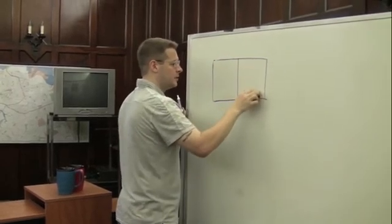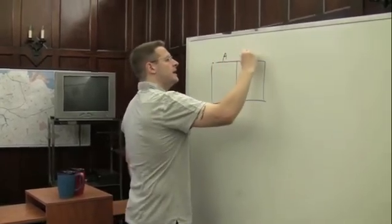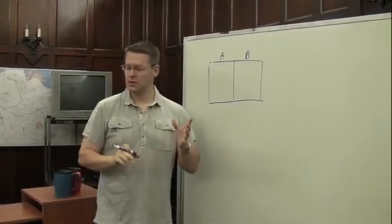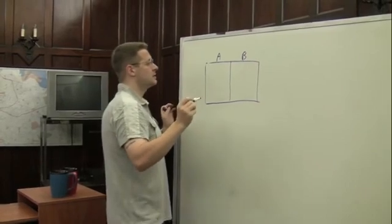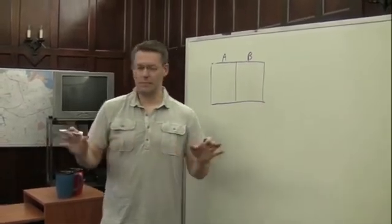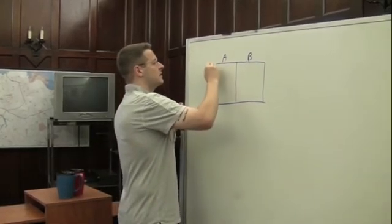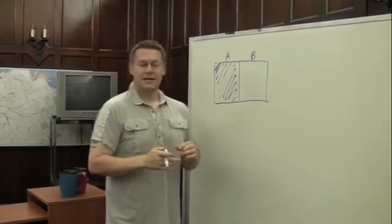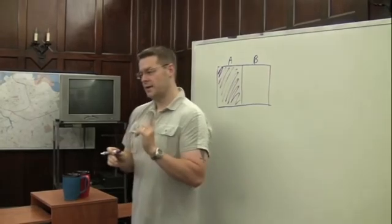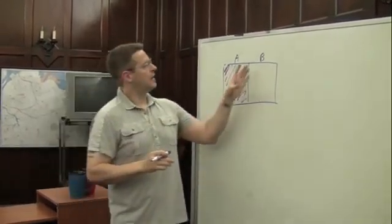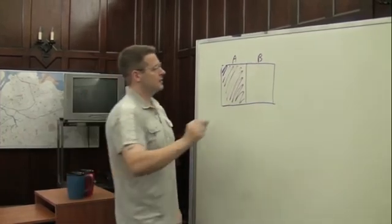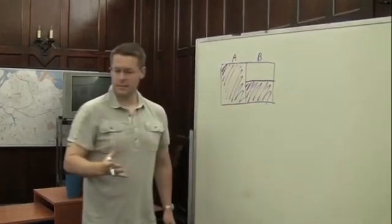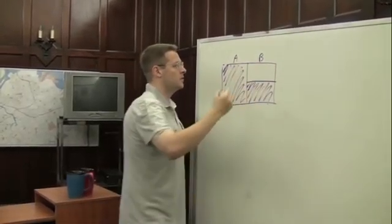We have Cup A and we have Cup B. In Cup A there are 20 red gumballs and nothing else — no other gumballs. So all of the space of A is filled in by red gumballs, because that's all you can possibly draw from it. In Cup B, we have 10 red gumballs and 10 white gumballs. We'd color half of B's space — the shaded area represents the red gumballs, and the unshaded area represents the white gumballs.